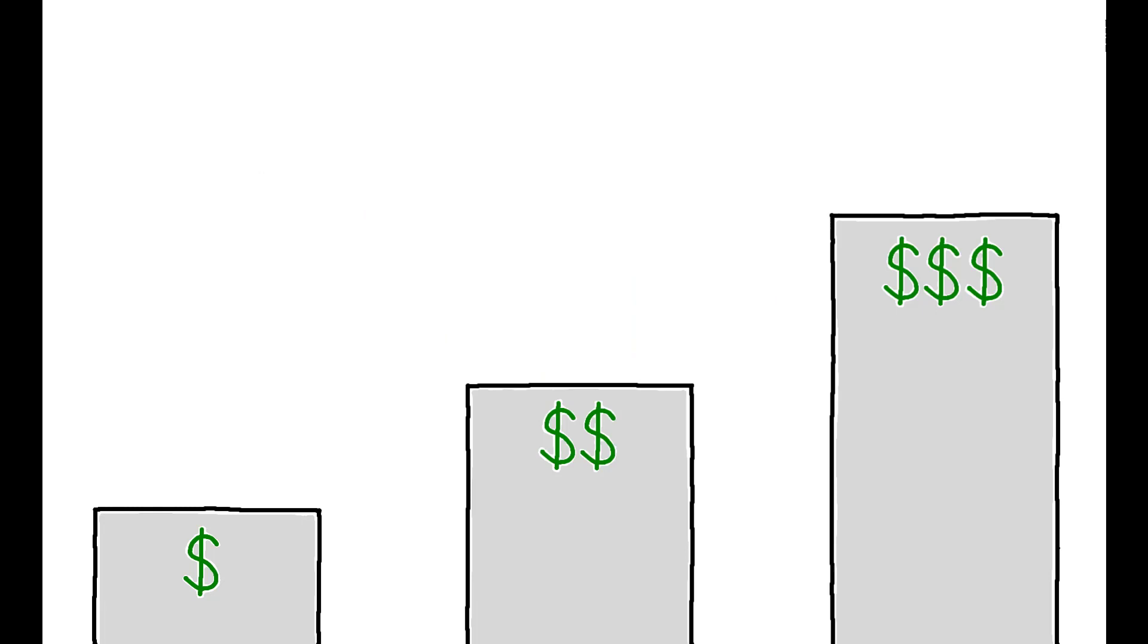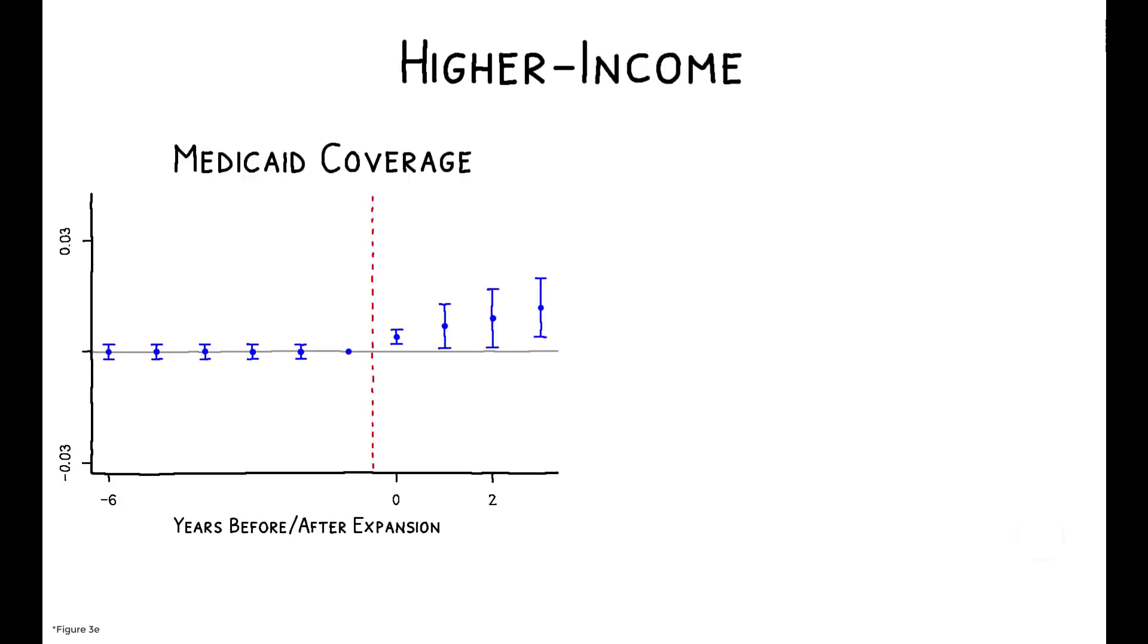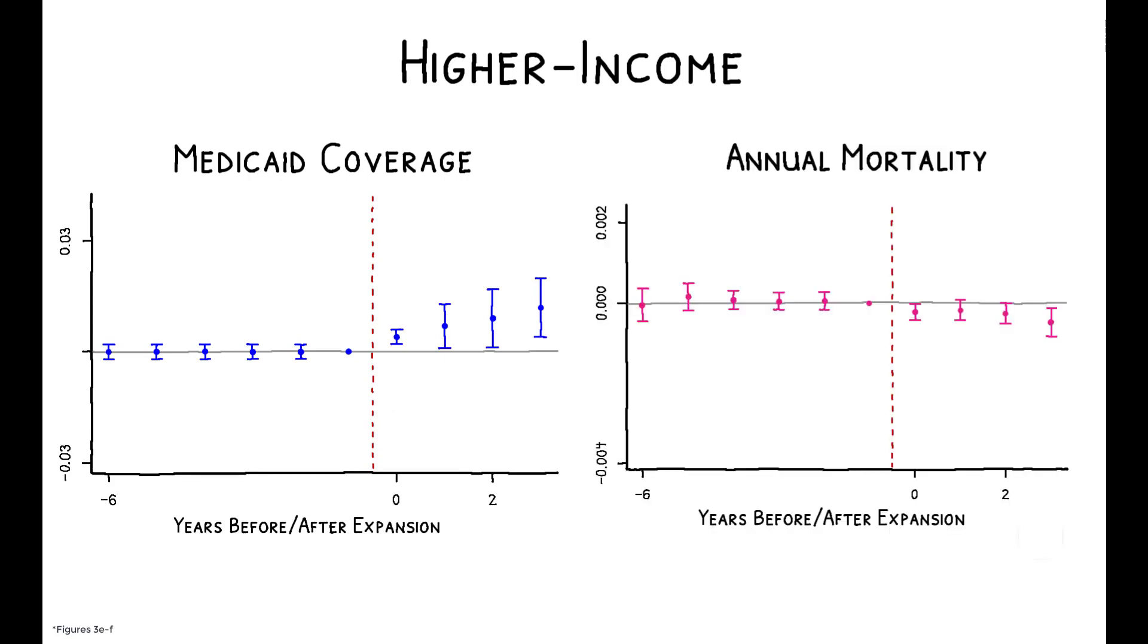Similarly, we would expect higher-income individuals to be less affected by the eligibility changes, though they could still benefit from the Medicaid expansion if their income falls or is misreported in the survey data. For this group, there is a slight increase in Medicaid coverage after the expansions, and a corresponding reduction in mortality, but the effects are small, amounting to just 15 to 20 percent of the effect sizes observed in the primary sample.